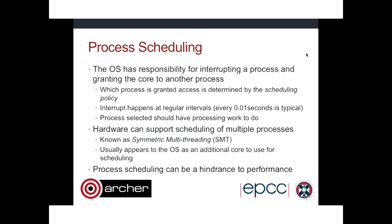Hardware can support scheduling of multiple processes to a single core very quickly through a process known as symmetric multi-threading. Confusingly, hardware threading here is not the same as software threads — these are hardware threads, something very different. This usually appears to the operating system as an additional core. For example, on machines with Intel processors such as Archer, the OS sees double the physical cores because there are two hardware threads per core. On Archer's compute nodes, you have to specifically ask for this extra hardware, as it's generally suboptimal for most applications.